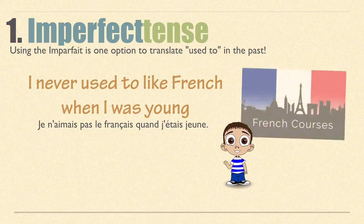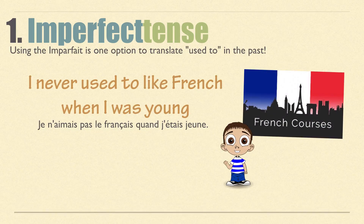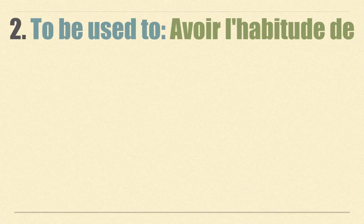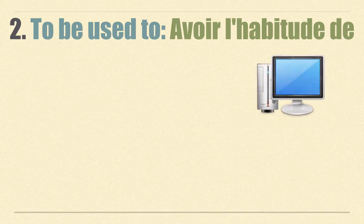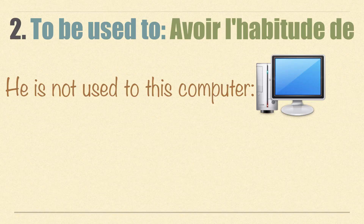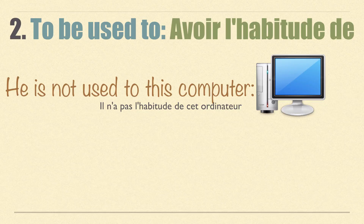We saw that in the lesson about the imparfait and le passé composé. Now let's see the present tense — how to translate 'to be used to'. One way is with the verb avoir. In English we have 'to be', but in French it is 'to have', and the expression is avoir l'habitude de, with the preposition de. Example: 'He is not used to this computer' — il n'a pas l'habitude de cet ordinateur.